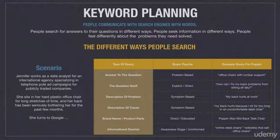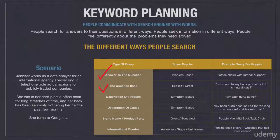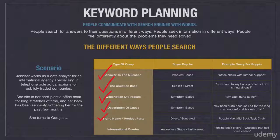To quickly review: there are six major types of queries performed on search engines. People will type in the answer to their question, the question itself, a description of the problem, a description of the cause, brand name and product parts, and informational queries.